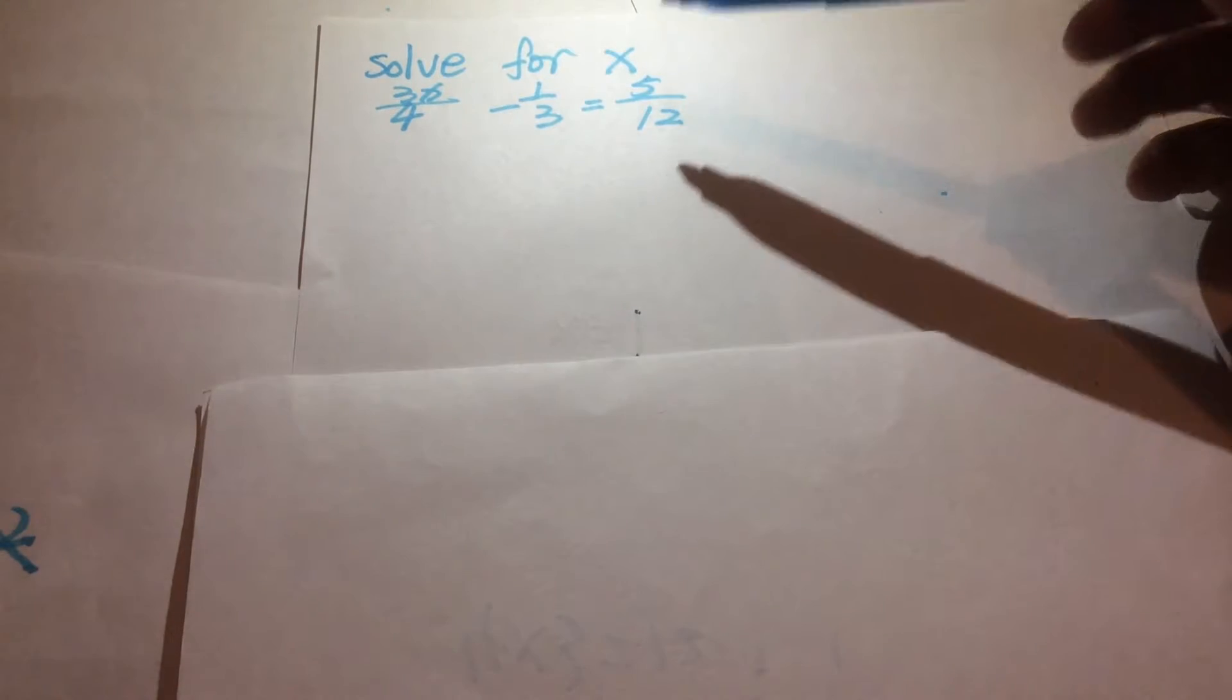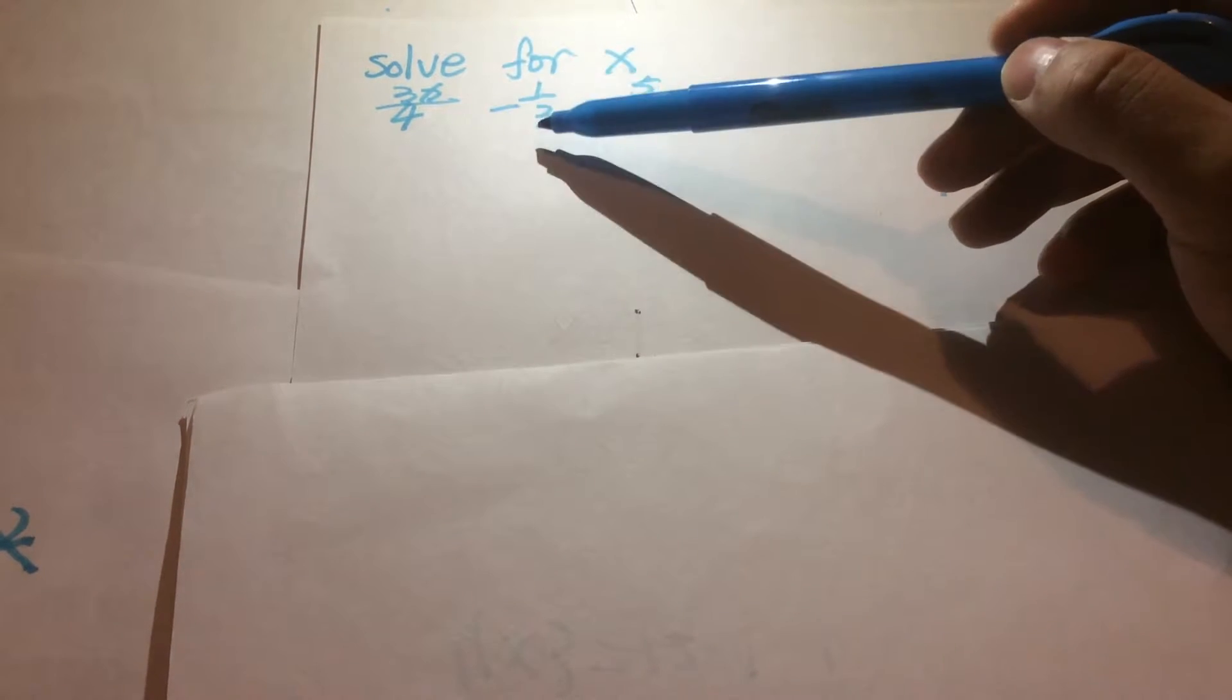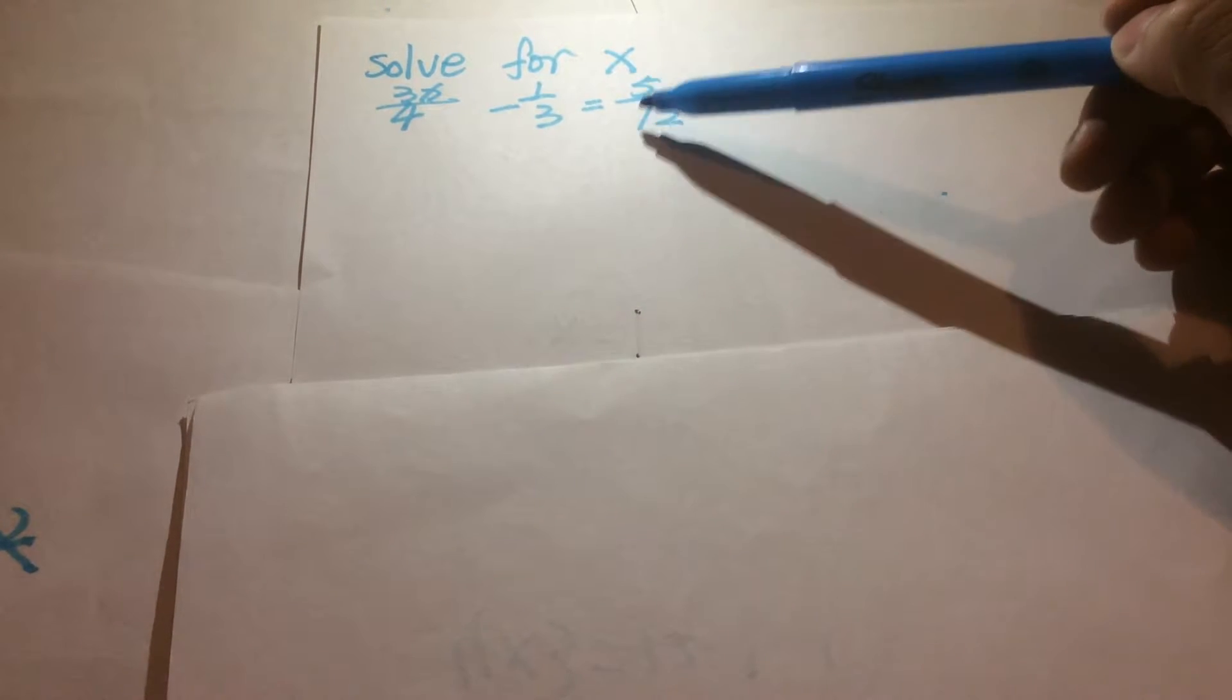Let's look at the equation first. 3x over 4 minus 1 over 3 equals 5 over 12.